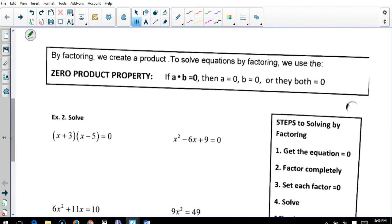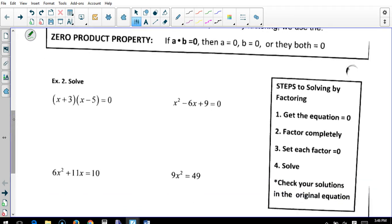Now when we factor, we create products. And we have an equation that we have to set each of them equal to 0 to solve. So in this case, we already have it factored, so we're going to set both of these equal to 0. So we have negative 3 for the answer and positive 5 for the answer.